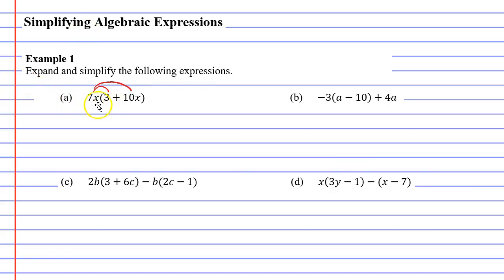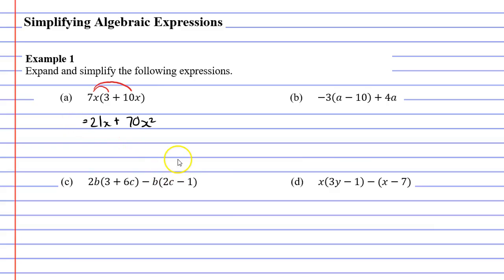What is 7x times 3? Well 7 times 3 is 21, so we're going to get 21x. And then what is 7x times 10x? Well 7 times 10 is 70. You'll notice we've got two x's — one in the 7x and one in the 10x. So when you have two x's you need to write it as x squared. The 2 is basically saying that there are two of the x's. We're going to put a plus between these two terms, so that's question A expanded.